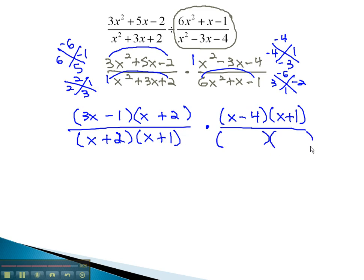As we try and factor, we find the way to get 6x squared is going to be 3x times 2x, because 6 times 1 will not work. 3x times positive 1 and 2x times negative 1 will make it work.